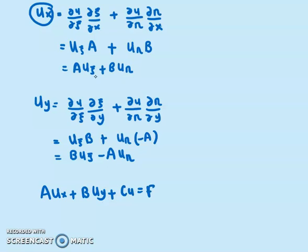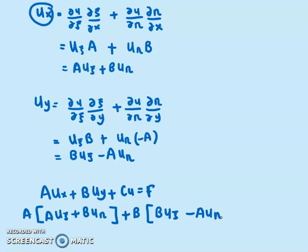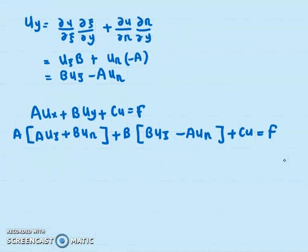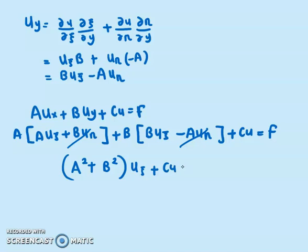Substituting U_X and U_Y into A·U_X plus B·U_Y plus C·U equals F, we can see that the terms A·B·U_eta and negative B·A·U_eta cancel out, leaving us with (A² plus B²)·U_Psi plus C·U equals F, which has only one independent variable: Psi.